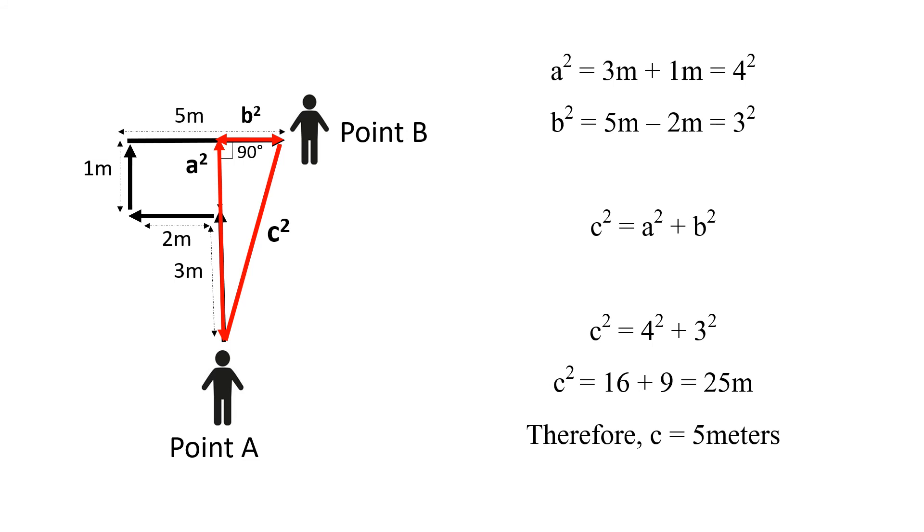Therefore, C square is equal to 4 square plus 3 square, that is 16 plus 9, which is equal to 25 meters. Therefore, C, that is how far the man is from the starting point, is 5 meters.